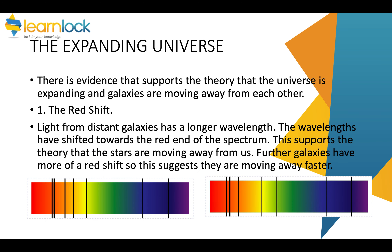There is evidence that supports the theory that the universe is expanding and that galaxies are moving away from us and away from each other. One piece of evidence is called red shift. Red shift tells us that light from distant galaxies has a longer wavelength — the wavelengths have shifted towards the red end of the spectrum. Further galaxies have more of a red shift, meaning they are moving away faster.